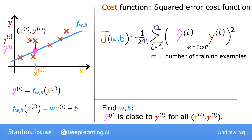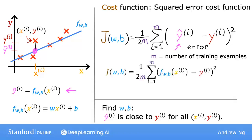Just as a reminder, the prediction y-hat is equal to the output of the model f at x. So we can rewrite the cost function J of w,b as 1 over 2m times the sum from i equals 1 to m of f of x_i minus y_i, the quantity squared. Eventually, we're going to want to find values of w and b that make the cost function small. But before going there, let's first gain more intuition about what J of w,b is really computing.